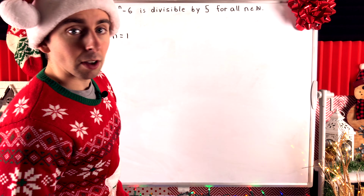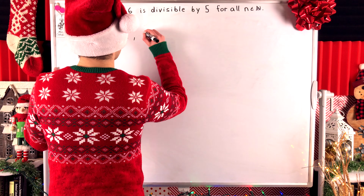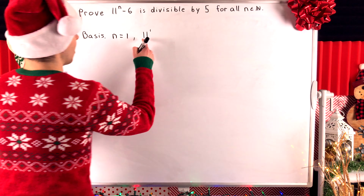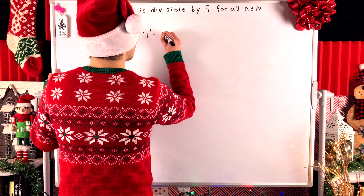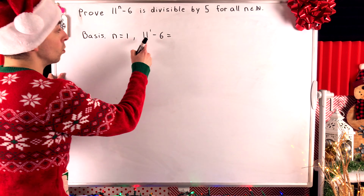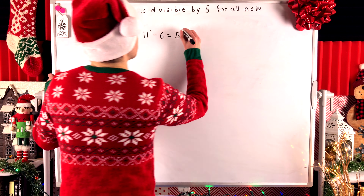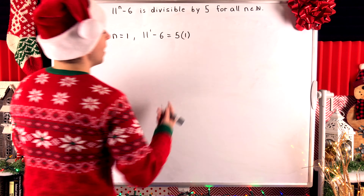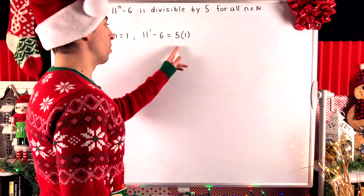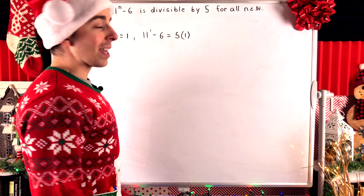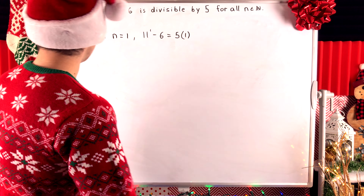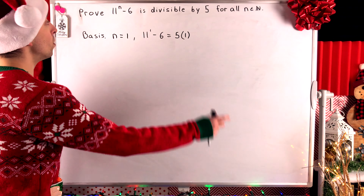It's the most wonderful time of the day — time for a brand new Wrath of Math lesson. Today we'll be going through another basic induction proof. We'll be proving that 11 to the power of n minus 6 is divisible by 5 for every natural number n. This result also happens to hold for n equals 0, but we're concerned with the natural numbers for this particular proof.